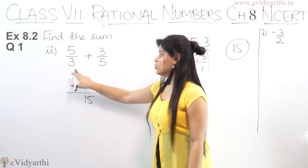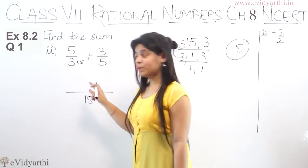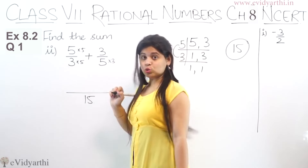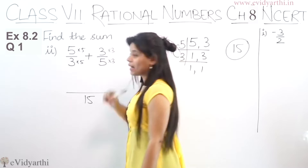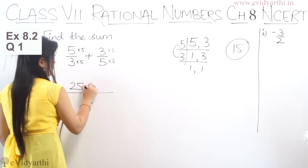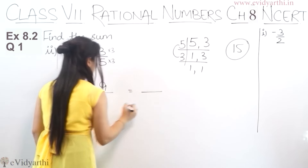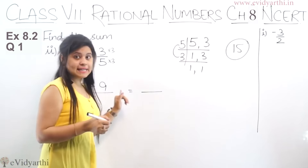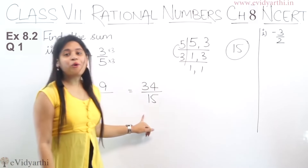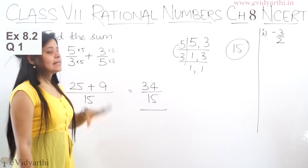Using the shortcut, we write 15 directly. To make 3 into 15, multiply by 5 — so numerator also gets multiplied by 5: 5 fives are 25. Then to make 5 into 15, multiply by 3 — so numerator also gets multiplied by 3: 3 threes are 9. So we get 25 plus 9 upon 15, which is 34 upon 15. You can see this cannot be simplified further, so 34 upon 15 is the answer.